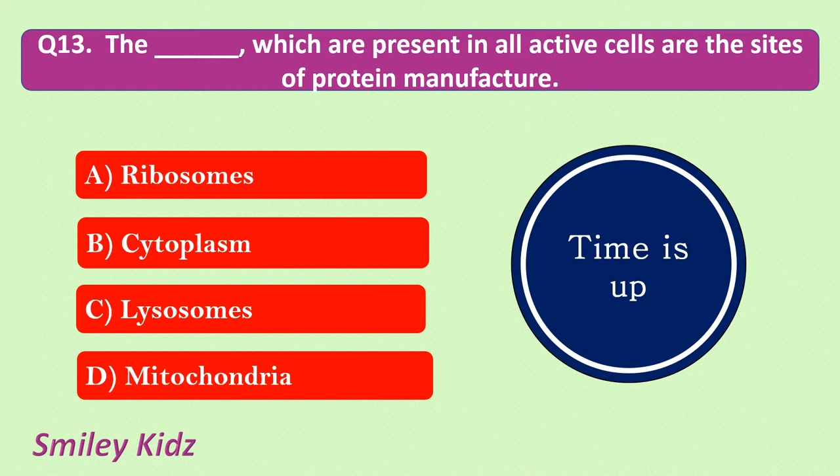Your time is up and the correct answer is ribosomes. The ribosomes which are present in all active cells are the sites of protein manufacture.